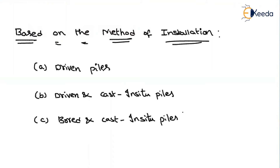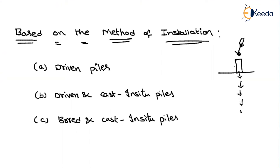Driven piles are piles that are driven through dynamic action. You precast the pile, take it to the project site, place it on top of the soil, and by using hammers you keep hitting the pile so it moves below the ground surface. This is what is called a driven pile — it is kept in position using dynamic action.